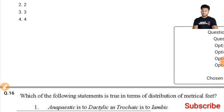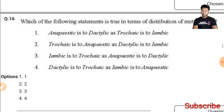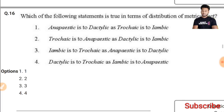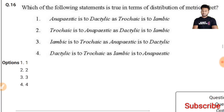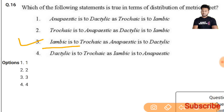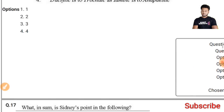Question 16: Which of the following statements is true in terms of distribution of metrical feet? The right answer is the third option: iambic is to trochee as anapestic is to dactylic — they are the reverse or mirror of each other.